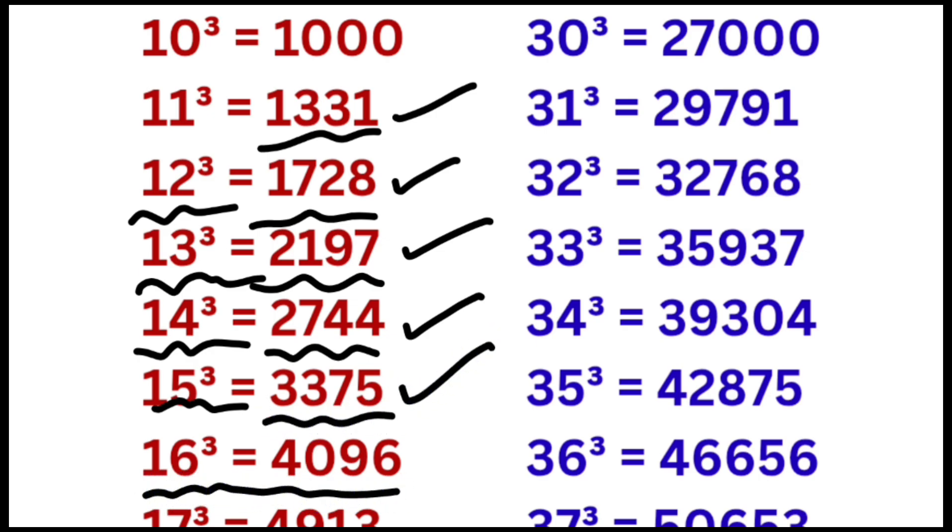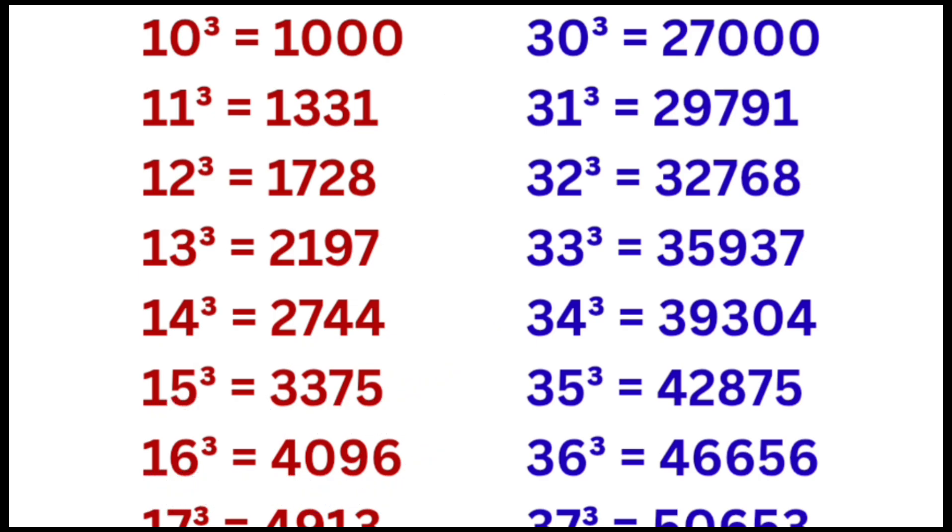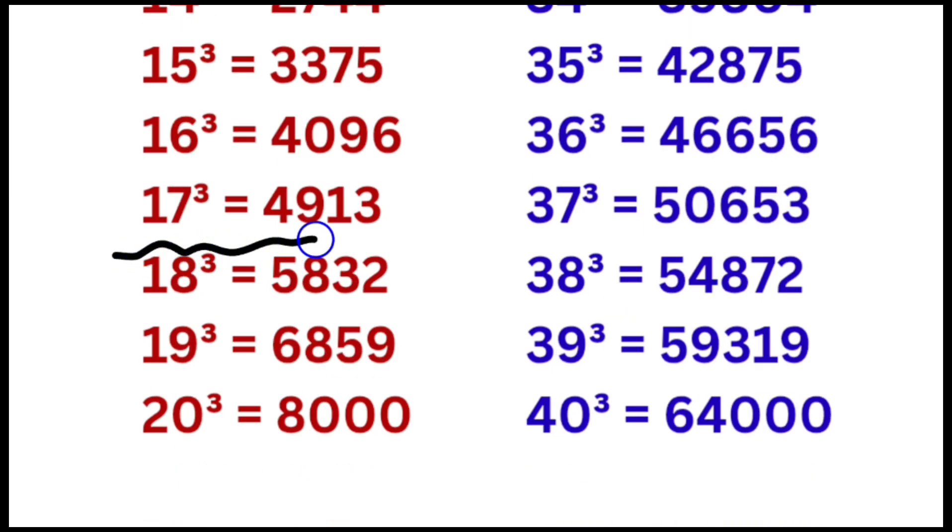Cube of 16 is equal to 4096, cube of 17 is equal to 4913, cube of 18 is equal to 5832, cube of 19 is equal to 6859, cube of 20 is equal to 8000.